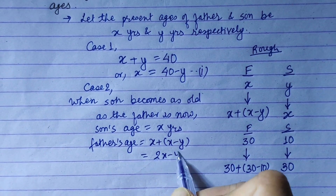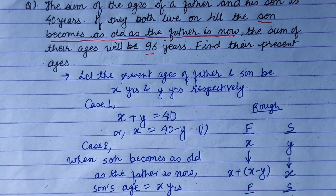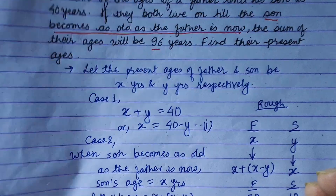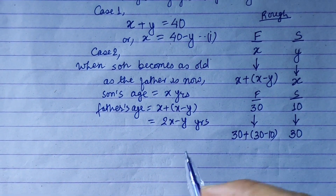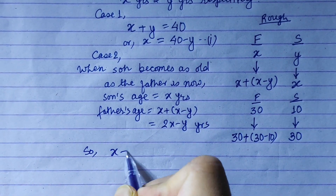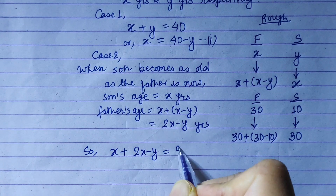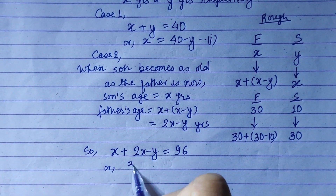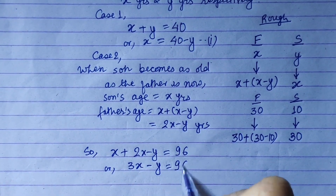So from Case 2, the future ages give us: 2x minus y for the combined future age expression. The sum of their ages will be 96 years. So 40 plus (2x minus y) is equal to 96, which simplifies to 3x minus y is equal to 96.